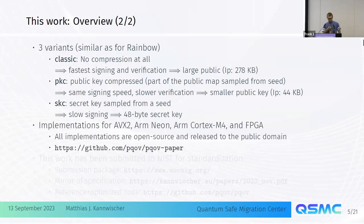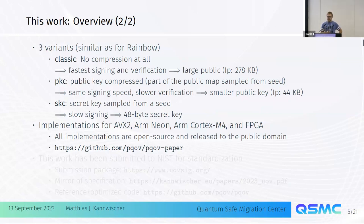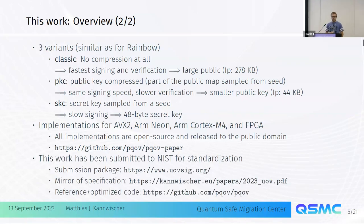In this paper, in addition to proposing these parameters, we present implementations for AVX2, ARM-NEON, ARM Cortex-M4, and FPGA. It's a very long implementation paper presenting state-of-the-art implementations. Many of these tricks have been in Rainbow literature or other MQ literature, but we put it all together to have a full set. The implementations are open source and public domain. We've also submitted this to NIST for standardization.